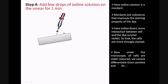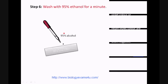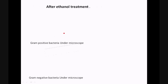Now under the microscope, we can see all the cells in violet color. This is the most crucial step in Gram staining: wash with 95% ethanol for a minute. On washing with ethanol, the bacteria that retains the violet color of the crystal violet is Gram positive. The bacteria that loses the violet color is Gram negative. The difference in retention of the stain is due to the difference in the cell wall composition of Gram positive and Gram negative bacteria.